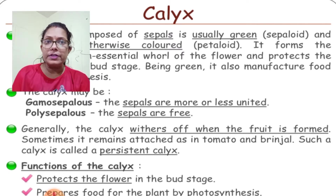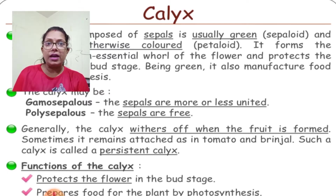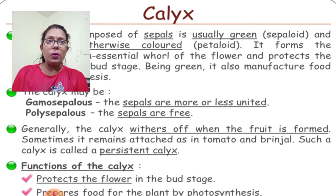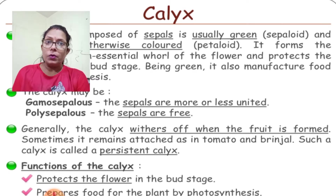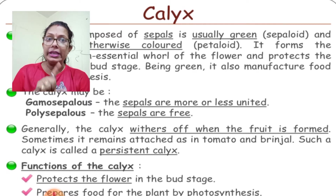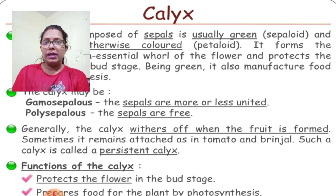The first whorl is the calyx. The unit of calyx is known as sepal, and sepals collectively form the calyx. Sepals are generally green in color, so the calyx is also green — this is known as sepaloid calyx. But if the calyx is any color other than green, it is known as petaloid calyx.